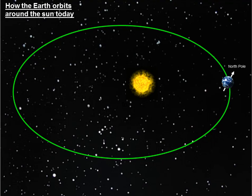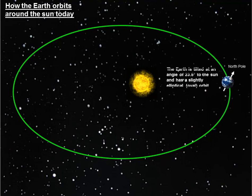This video is all about Milankovitch cycles and how the Earth orbits around the Sun today and how it's changed in the past. There you can see the current situation — the Earth is tilted at an angle of 23.5 degrees to the Sun and has a slightly elliptical orbit.